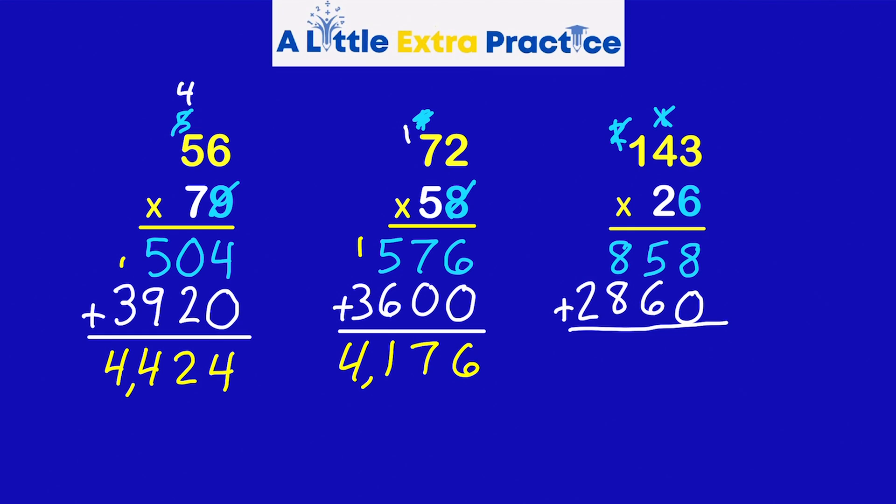My partial products are 858 plus 2,860. My final step is addition. And my product is 3,718.